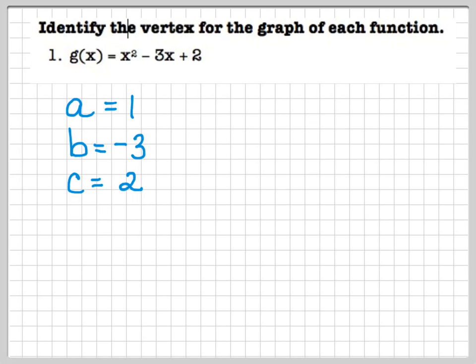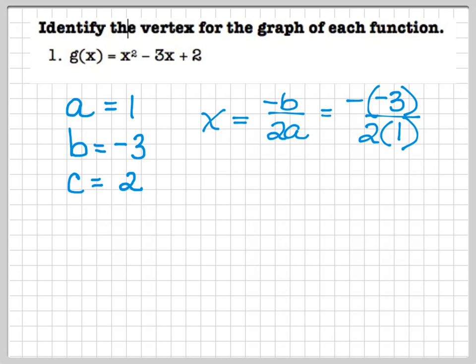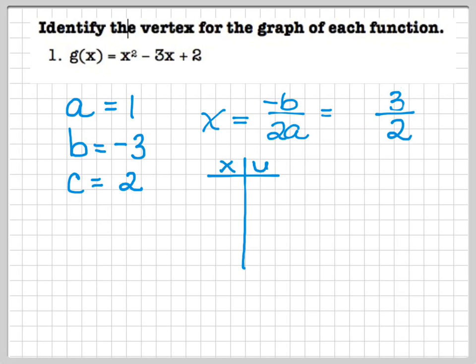You don't really need to know c for the vertex, but get into the habit of listing all three. Now we're going to construct a number obtained by taking the opposite of b and placing it over 2a — that's negative b over 2a. The opposite of b over 2 times a gives us positive 3 over 2, and that gives us the x-coordinate of the vertex.